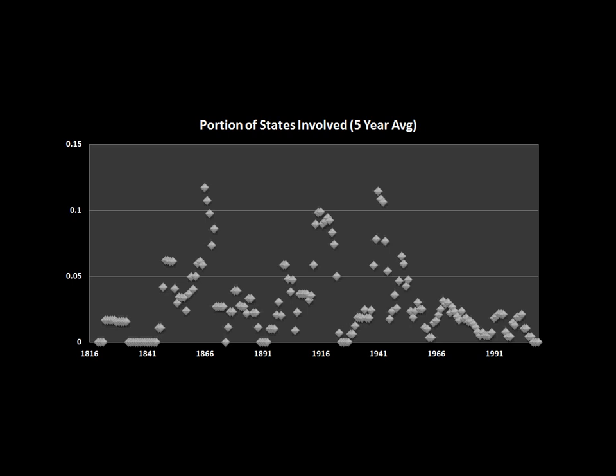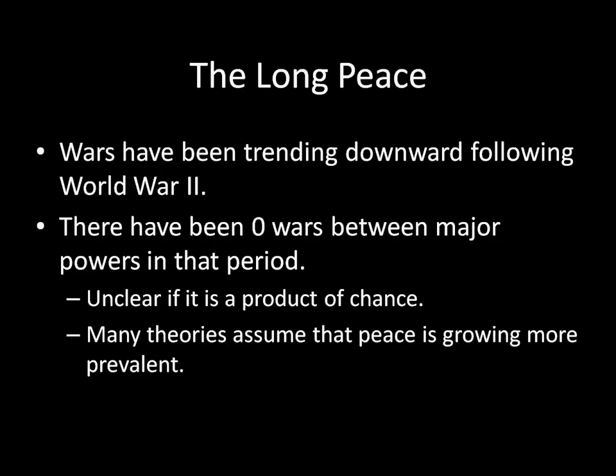The world we're living in now is sometimes known as the long peace — the long peace era. This reflects the fact that wars have been trending downward following World War II. Perhaps more importantly, there have been zero wars between major powers in that post-World War II period. A major power is a country like the United States, China, or Russia — countries that have the ability to project power in great quantities over long distances. Unfortunately, it's still not clear whether this long peace is the product of chance or an actual underlying phenomenon, since there just hasn't been that much time between the last major power war, World War II, and today to know statistically whether this is random luck or something actually good in the world.